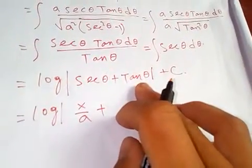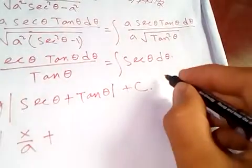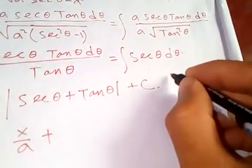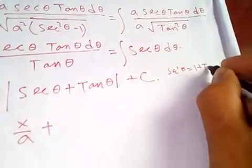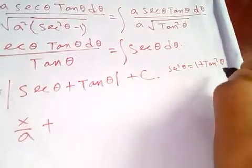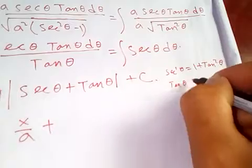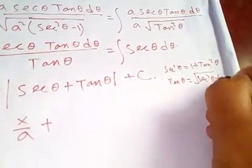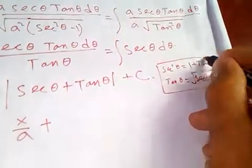Let's substitute our values. Log of sec θ—if you find sec θ, it will be x over a. We know that sec squared θ equals 1 plus tan squared θ, so if you find tan θ, it will be...